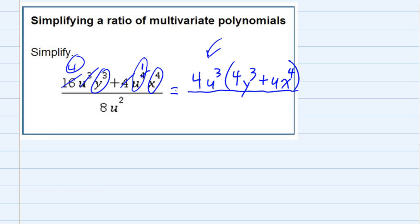Now in the bottom I can't factor that, it's just one term, so I'm just going to write that 8 U². But now that we have everything factored, we can look to see if there's anything that can cancel.